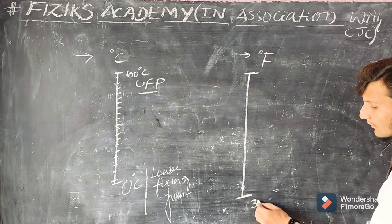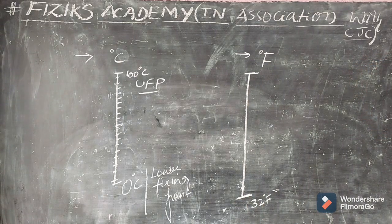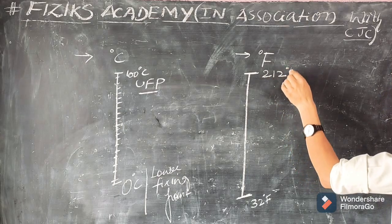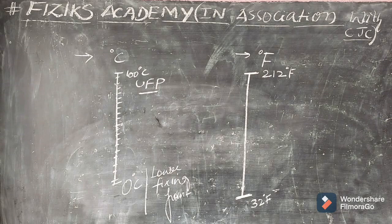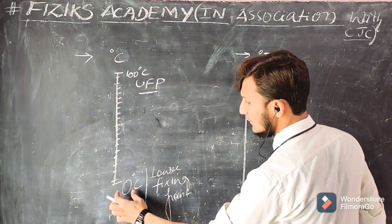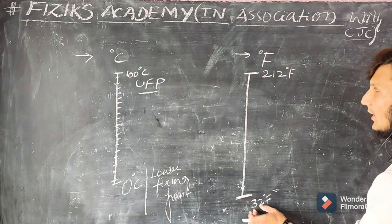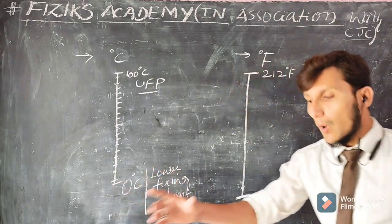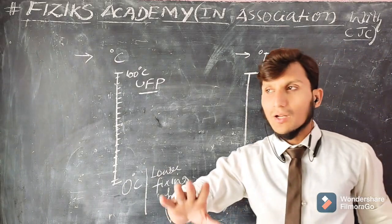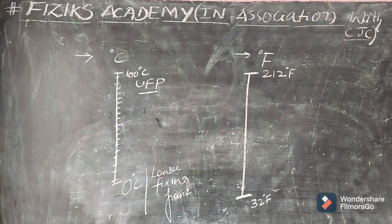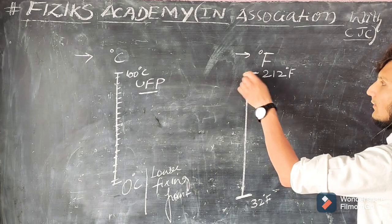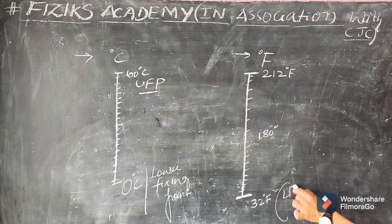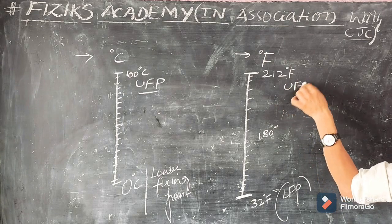On the Fahrenheit scale, the minimum possible temperature is 32 degrees Fahrenheit and the maximum is 212 degrees Fahrenheit. Zero degree Celsius is exactly equal to 32 degrees Fahrenheit — they represent the same temperature. In between 32 and 212 degrees Fahrenheit, there are 180 equal parts. These are called the lower and upper fixing points.